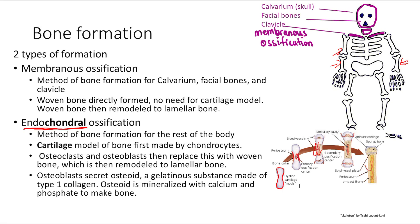This woven bone will then expand, extend, and eventually be replaced with lamellar bone. The way osteoblasts do this is they secrete something called osteoid. Osteoid is a gelatinous substance made of type 1 collagen — remember, type 1 is for bone. This osteoid is then mineralized with calcium and phosphate to make bone. This is all very important — you're going to see a practical application to this later.